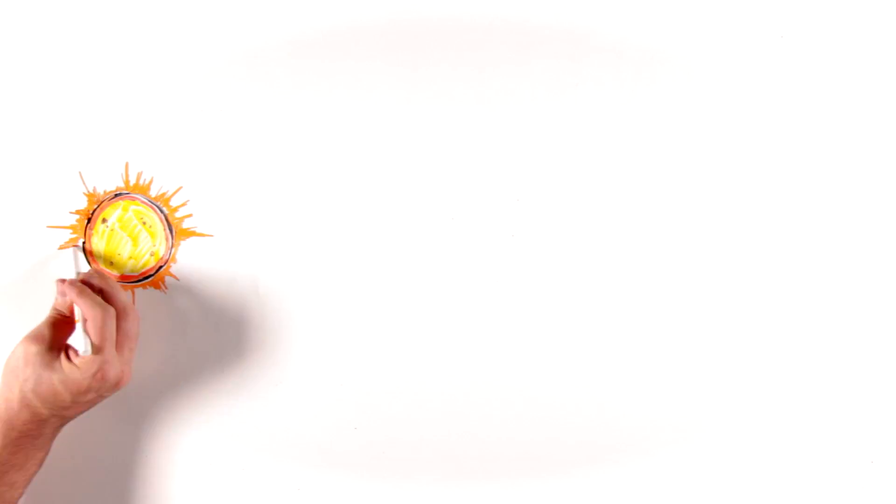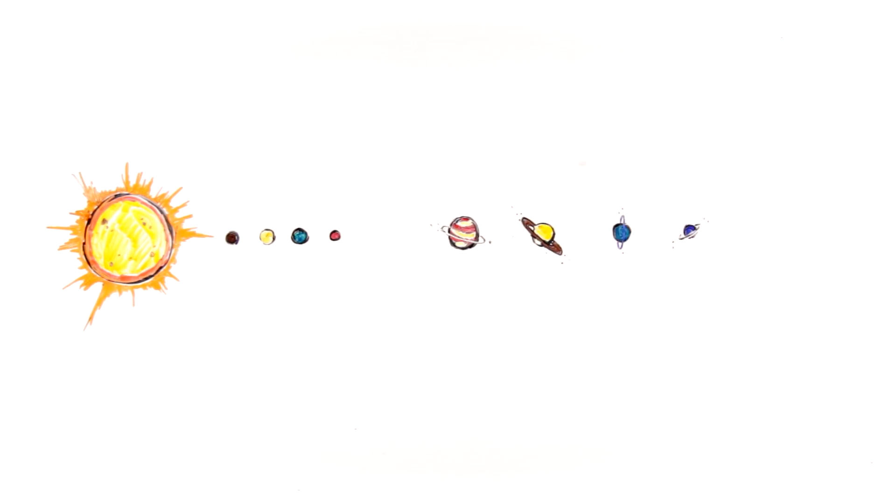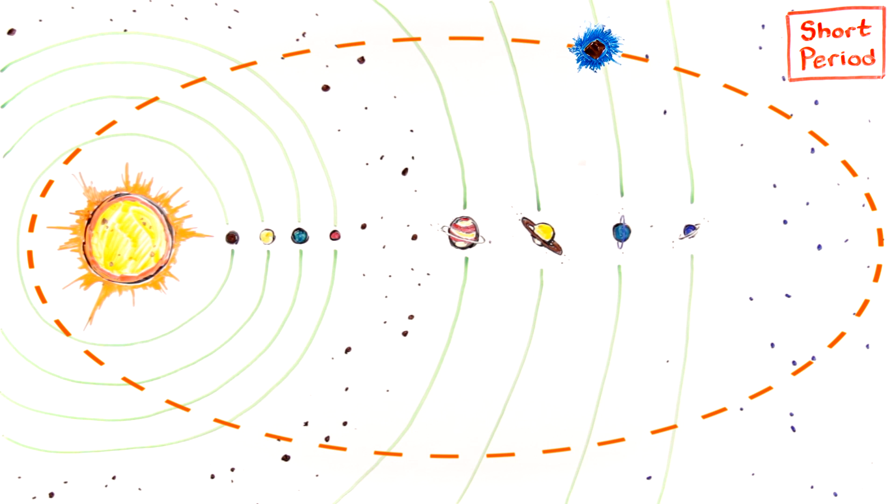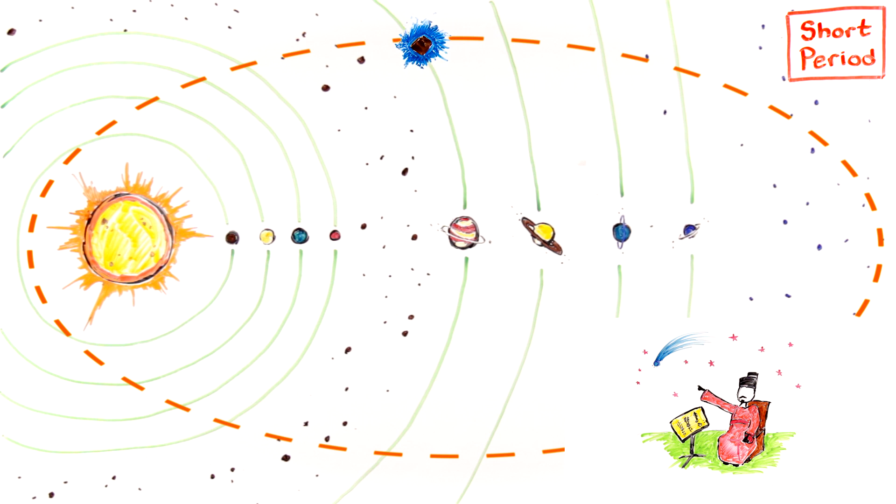Short period comets have orbital periods of less than 200 years. Some, like Halley's Comet, are observed on multiple passes. Chinese astronomers first recorded the apparition of Halley's Comet in 240 BC, and people have watched for it at 74-79 year intervals for 2200 years.